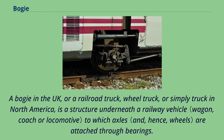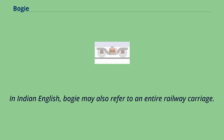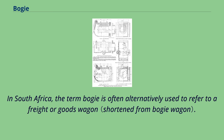A bogey in the UK, or a railroad truck, wheel truck, or simply truck in North America, is a structure underneath a railway vehicle to which axles are attached through bearings. In Indian English, bogey may also refer to an entire railway carriage. In South Africa, the term bogey is often alternatively used to refer to a freight or goods wagon.